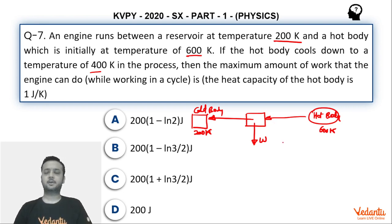So now let's see how do we do this question. The heat capacity is 1 Joule per Kelvin. Now, we need to find the work done by the engine which is most efficient.